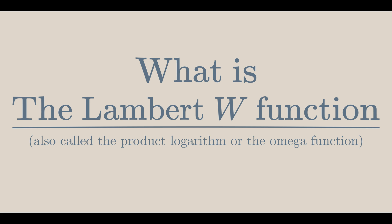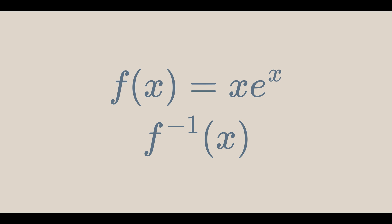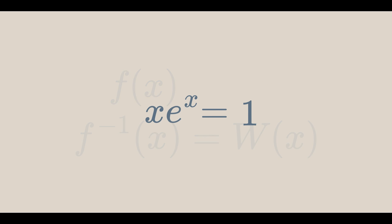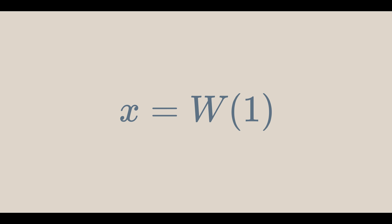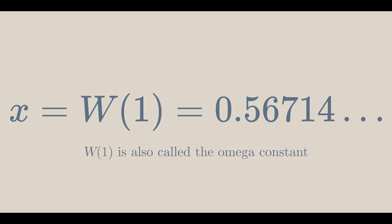But what is the Lambert W function? Given f equals x times e to the x, the inverse function is the Lambert W function. So if we have an equation like x e to the x equals 1, we can solve for x using the Lambert W function. We get that x equals the Lambert W of 1, which is approximately 0.567.